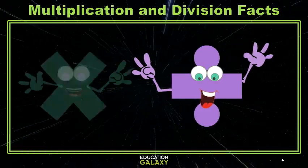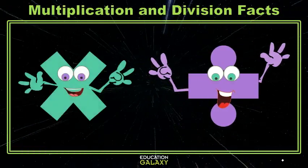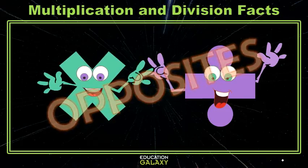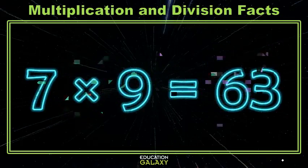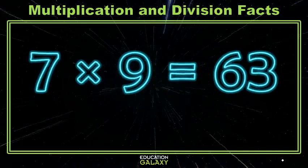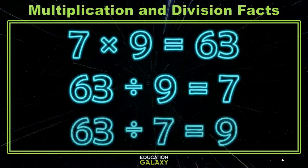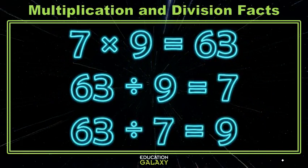Division and multiplication are friends, and that's good for us because they are opposite friends. That means that if I know one, I know the other. So, for instance, let's say I know 7 times 9 is 63. Then I also know that 63 divided by 9 is 7, and I also know that 63 divided by 7 is 9. So look how much you know.